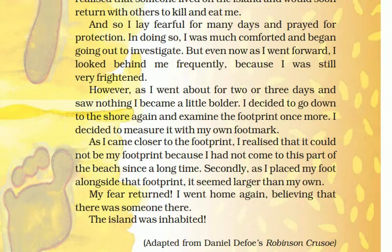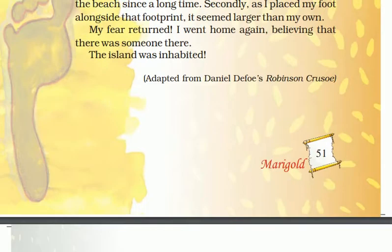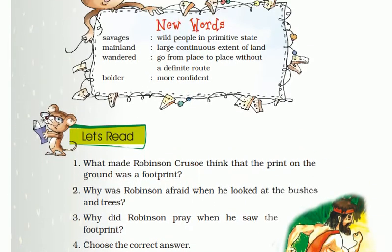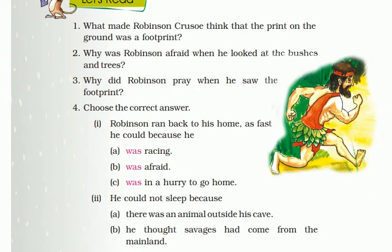My fear returned. I went home again, believing that there was someone there — the island was inhabited. Inhabited means that there were people living there. 'Bolder' means more confident. 'Wander' means to go from place to place without any definite route. 'Mainland' means a large continuous extent of land. 'Savages' means wild people in a primitive state. So this is it for today, and we will discuss the other story tomorrow. Stay tuned. Bye bye.